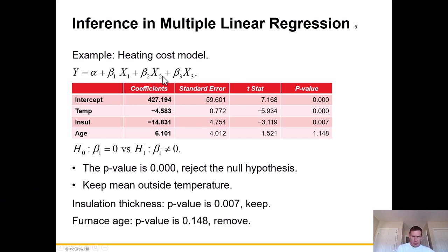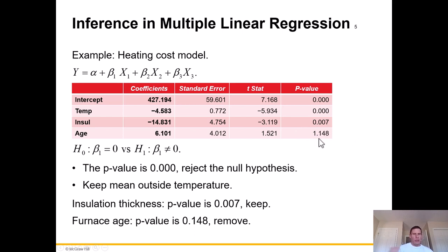Looking back at the heating cost model, the p-values are very low for the first two variables. Look at the p-value for temperature — very low, so we reject the null and keep mean outside temperature. Insulation thickness has a p-value of 0.007, very low — keep it. The furnace age p-value is 0.148, so we could say maybe we should remove that because it doesn't seem to have much effect on the overall equation.